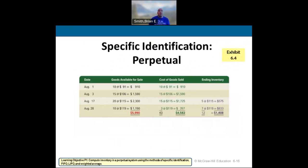Using the specific identification method in the perpetual inventory system, we track what we bought on August 1st and purchased on August 3rd — showing units purchased and the cost paid. In our ending inventory, we show how much we have of each lot. When we sold 43 units, we can say we sold all the units at $91 each, all those at $106 each, 15 of the 20 we paid $115 for, and 3 units we paid $119 for. We specifically identify each one and show what's left in ending inventory.